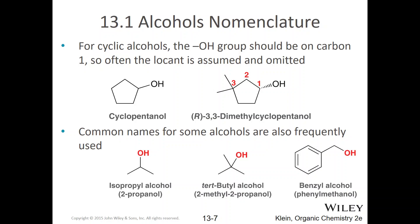For cyclic alcohols, the hydroxyl group should be on carbon one, so the locant is often assumed or omitted. If you have cyclopentanol, that's carbon one, and then two, three, four, five — pent. So we don't put the one out front; it's not necessary for cyclopentanol.